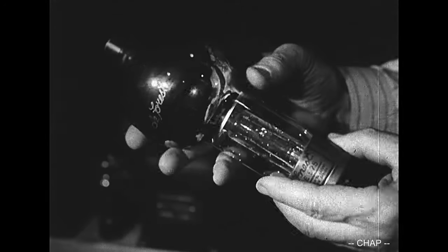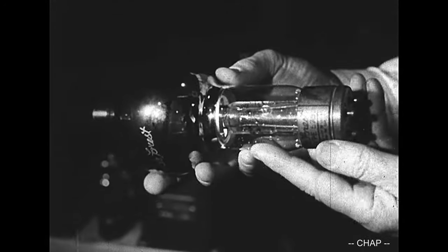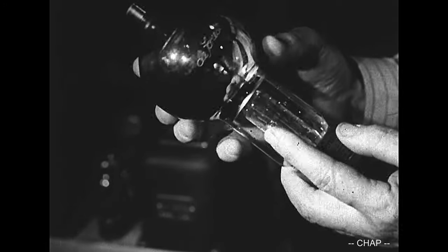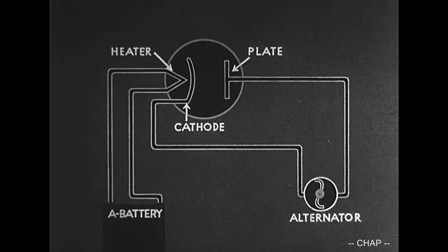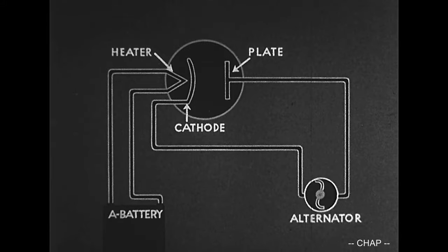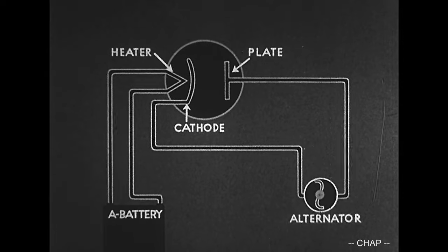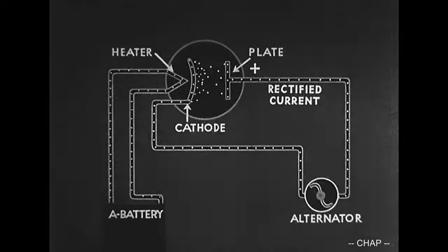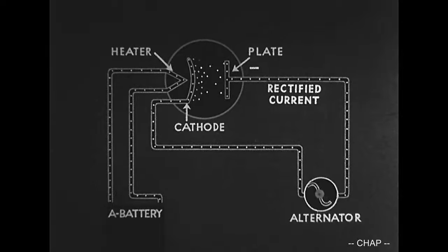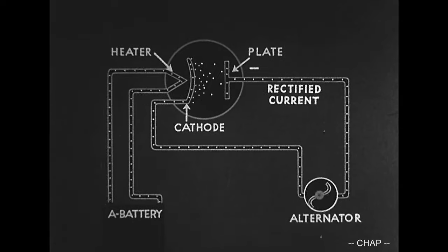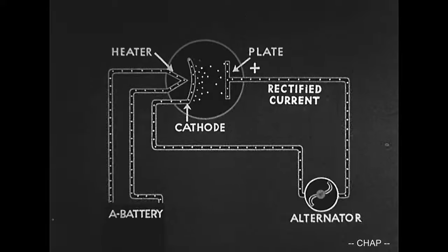The diode tube furnishes direct current in many radio installations. If an alternator is attached to the plate and the cathode of a diode tube, the plate will be charged first positive and then negative. A rectified current results. Electrons are attracted from the cathode to the plate and not in the opposite direction. The resulting plate current is direct current.